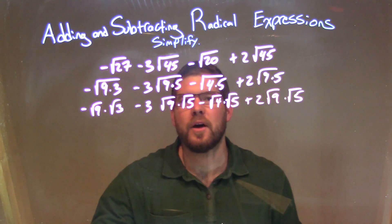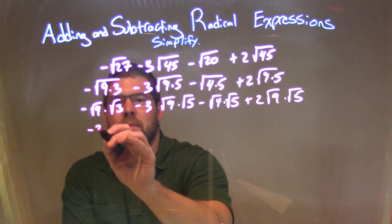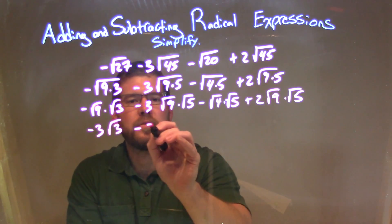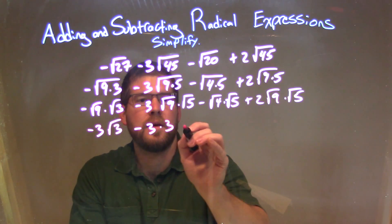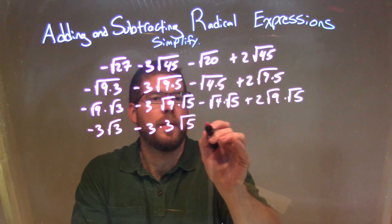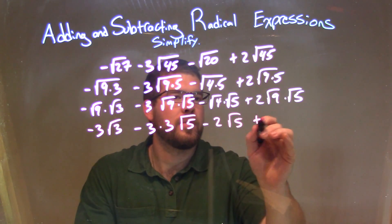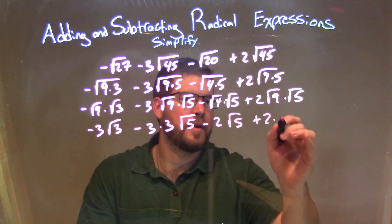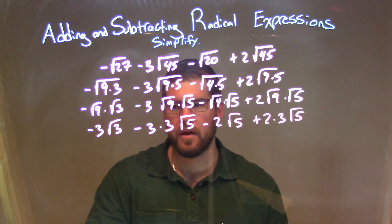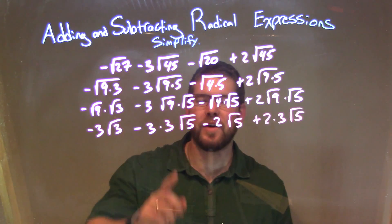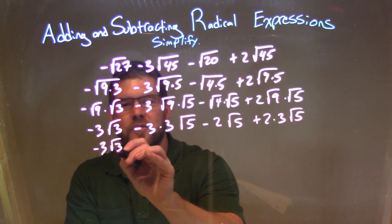So now simplify the ones we can easily take the square root of. Square root of 9 is 3, so I have minus 3 square root of 3 here, minus 3 times the square root of 9 — which is 3 — square root of 5. The square root of 4 is 2, square root of 5, plus 2 times the square root of 9 — which is 3 — square root of 5. So simplifying a bit more: the 3 times 3 and the 2 times 3, so we have negative 3 square root of 3.